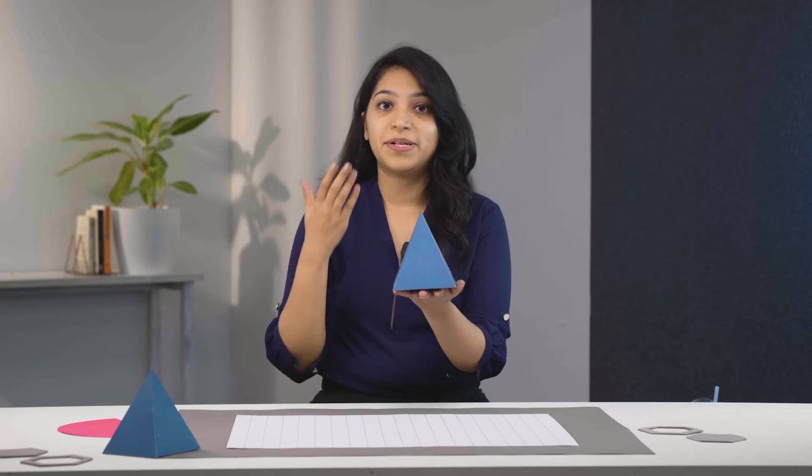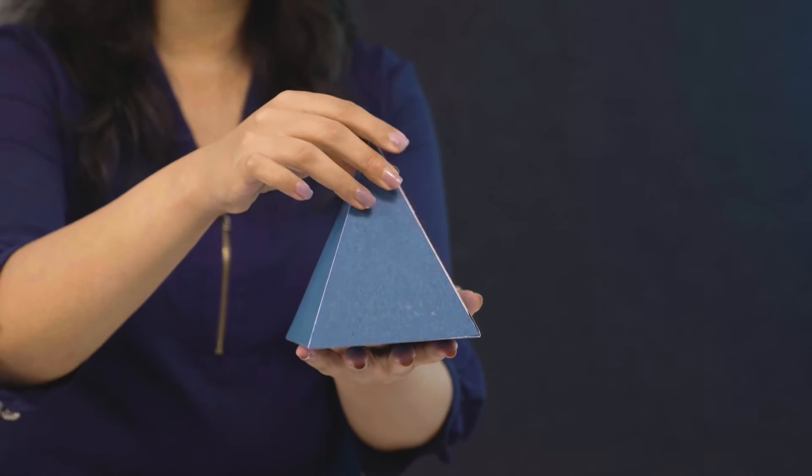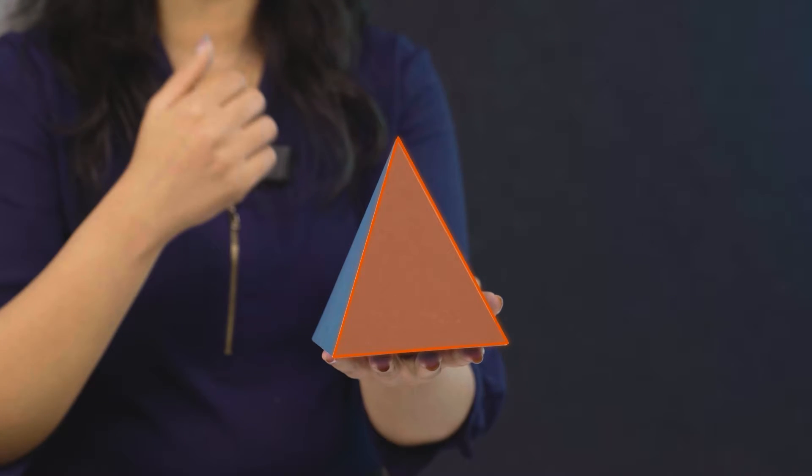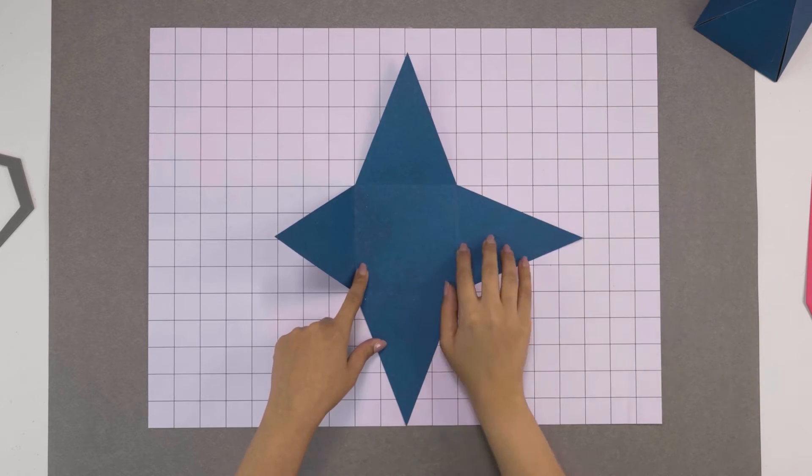What's the surface area of a pyramid? This pyramid has a square base and each of its slanted faces is a triangle. To find its surface area, we need to find the areas of all its faces.